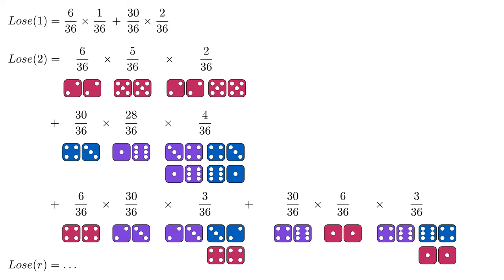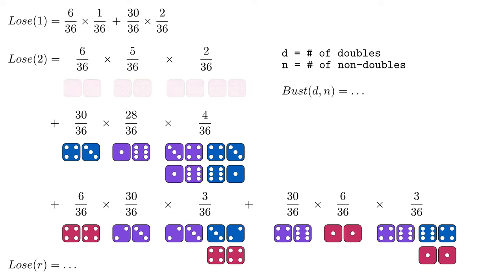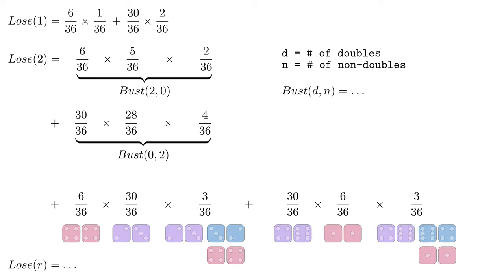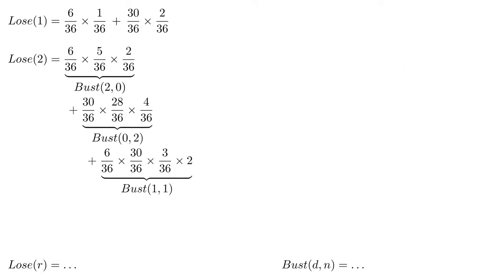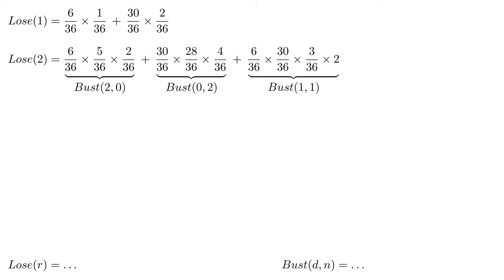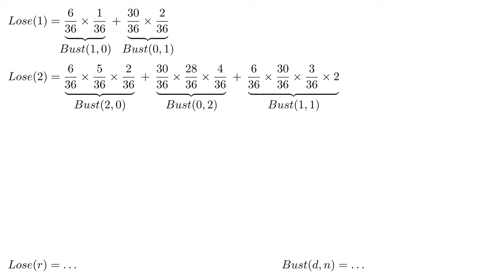This is suddenly a lot of terms, so I want to borrow a technique from my career as a software engineer and encapsulate some of the terms into functions. Mathematicians make up functions all the time, just like programmers, so I'm making up a function called bust, which takes two inputs, d a number of doubles and n a number of non-doubles, and represents the probability of busting after rolling any arrangement of those rolls. Introducing this function lets me fit more on the page and deal with smaller sub-problems instead of one large problem. It can also make patterns more apparent. For consistency, I'll add the functions to the first outcome as well.